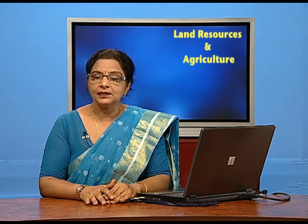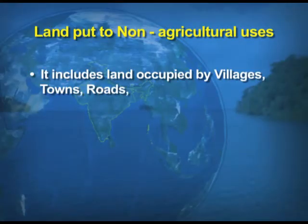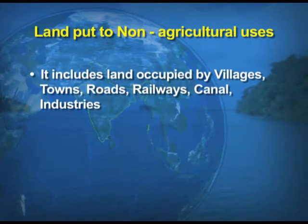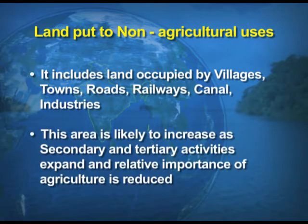The next land use category is land put to non-agricultural uses. Besides the agricultural land where we grow crops, all other uses are non-agricultural uses — for example, villages, towns, roads, railways, or industries. This area is likely to increase as secondary and tertiary activities expand and the relative importance of agriculture is reduced, because in India the trend is that people are shifting from rural areas to urban areas in search of better employment opportunities.